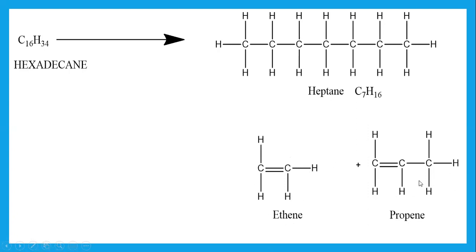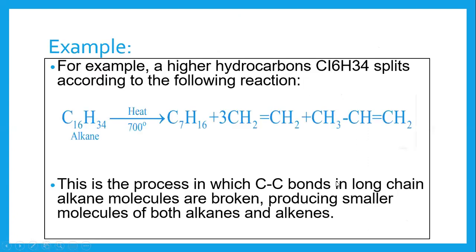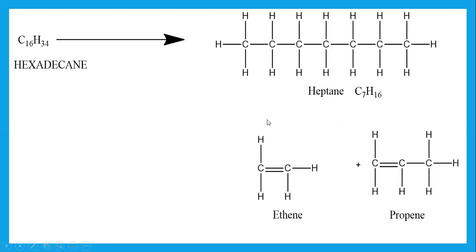For Ethene: CH2=CH2, total carbon is 2 and hydrogen is 4. If you draw out the full structure, you can verify that each carbon has 4 bonds. Similarly, for Propene with 3 carbons and a double bond, you can place the double bond and verify each carbon satisfies tetravalency.